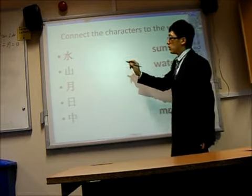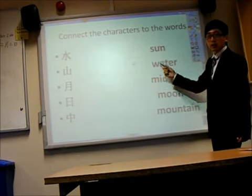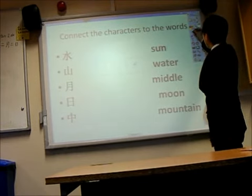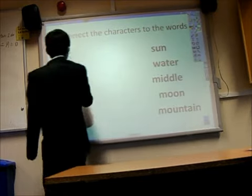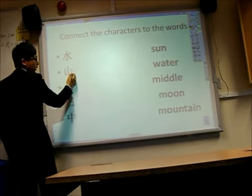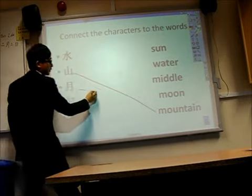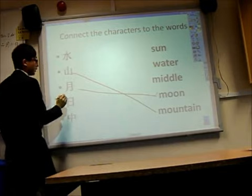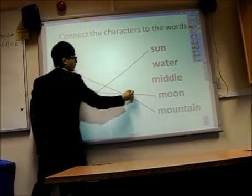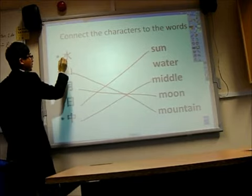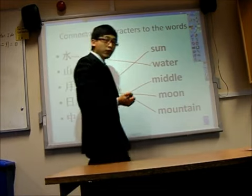I'd like you to connect those characters to the meanings. Have you got this? That looks like a mountain. That looks like moon. That looks like sun. And that looks real. And let me see for one, water. You got that?